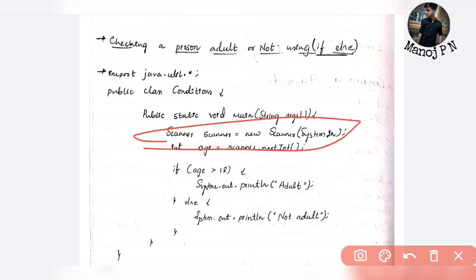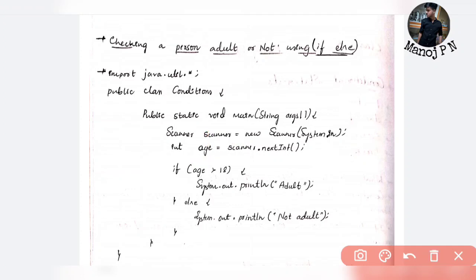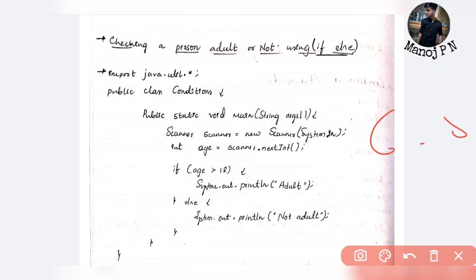First, scanner class — scanner is System.in. Scanner scanner equals new Scanner System.in. Scanner dot nextInt, because we are taking an integer. That's why I am taking integer. For age, if it were height like 6.8, you would use float or double.